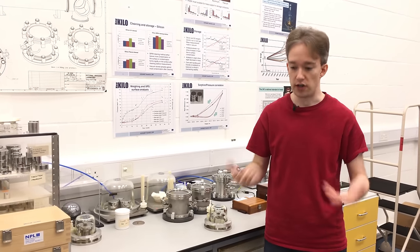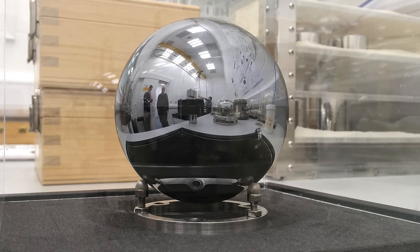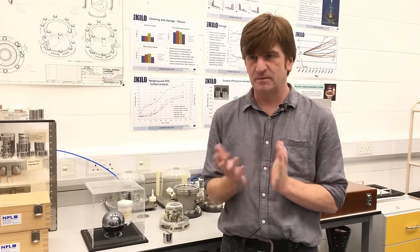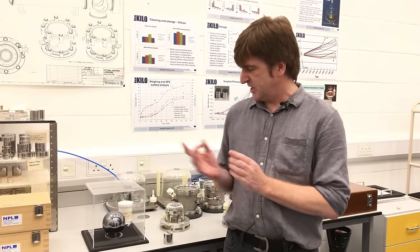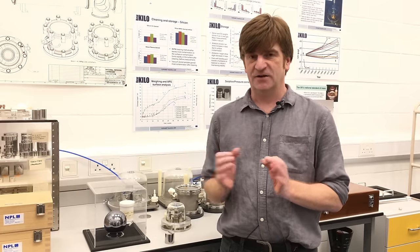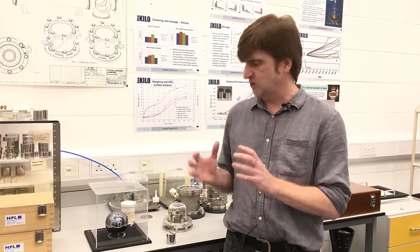There are two options. First, a fixed number of atoms. We manufacture one kilogram spheres of almost pure single crystal silicon relatively easily. What you have to measure here is the lattice spacing, i.e. how far the atoms are apart in the sphere, and the volume of the sphere.